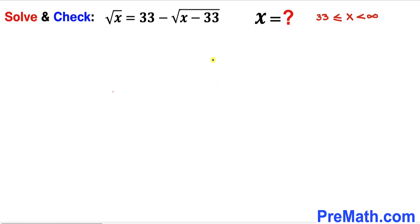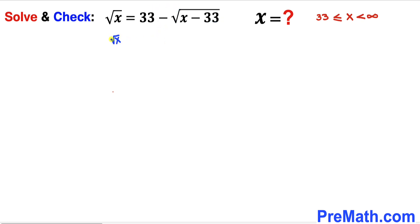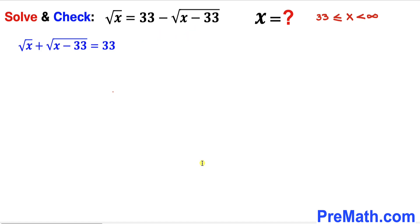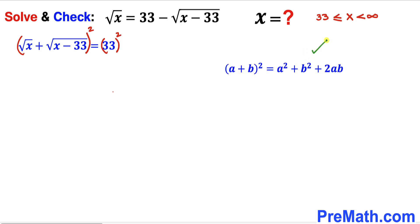Let's get started. Focusing on the given radical equation, I am going to move the radical part to the left hand side. Once we move it, that gives us: square root of x plus square root of x minus 33 equals 33. Now I am going to square both sides of this equation. Let's recall the identity: (a + b)² = a² + b² + 2ab, which we will apply to the left hand side.